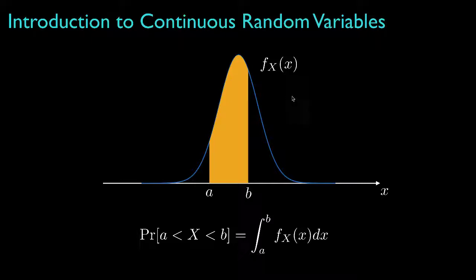One of the primary ways we use a probability density function is to define the probability that a random variable takes a value over an interval. Here, for instance, is the way we'd use the probability density function to determine the probability that a continuous random variable takes a value between a and b. Because of this, a probability density must only take nonnegative values to ensure that its integral over all possible regions is nonnegative. And because the probability that a continuous random variable takes any particular value is equal to zero, whether or not we include equality on either end of the inequalities that define this region is irrelevant for a continuous random variable.